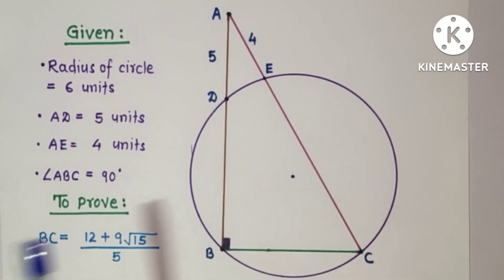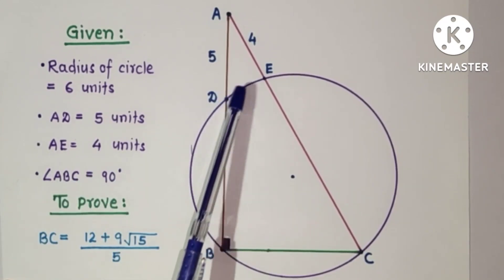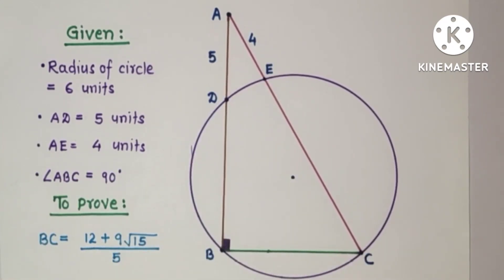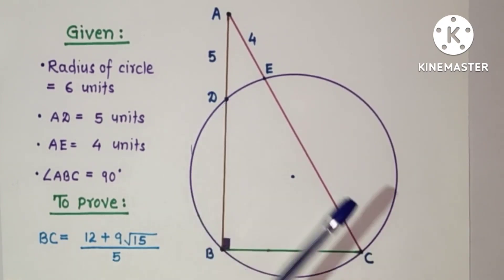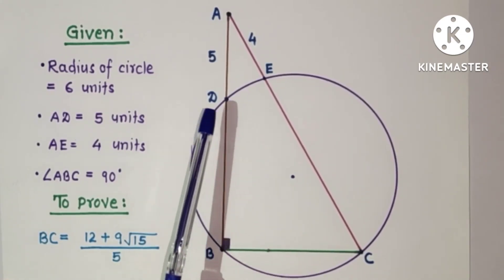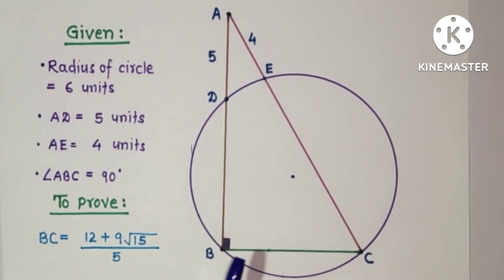To solve this question we have to join DE and DC. DC will be diameter as diameter subtends 90 degrees at the circumference, and DECB will be a cyclic quadrilateral.